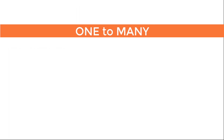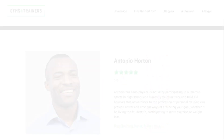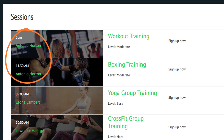1 to many relationships get even more interesting. For example, a city can have many streets, but streets can only be part of one city. So there is one city and many streets that we can create a relationship for. Or, on the gyms and trainers website, a trainer is one person, but they can have many sessions.